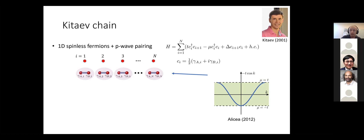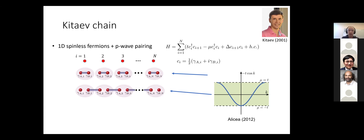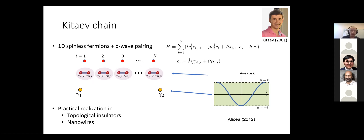However, when the chemical potential is inside the band, the ground state is dimerized differently: the Majoranas pair with their neighbors. As a result, two unpaired Majoranas appear at the ends of the chain while the bulk remains gapped. At low energies we can ignore the bulk and just have these two Majorana end modes. I will discuss how to realize this model in two platforms: topological insulators and spin-orbit coupled nanowires.